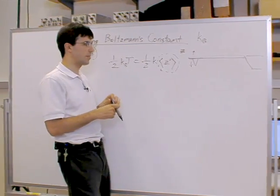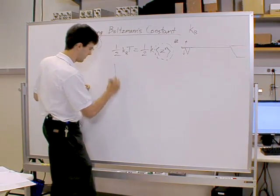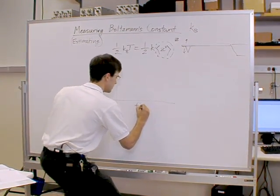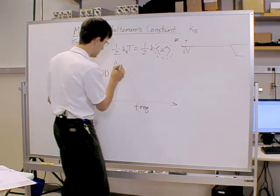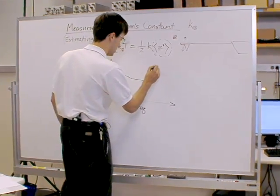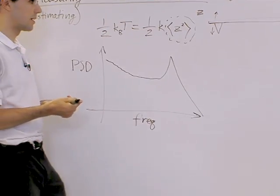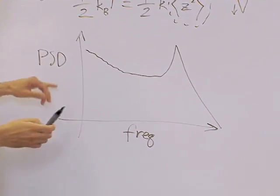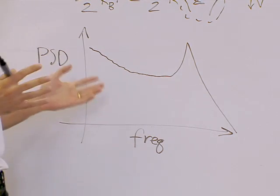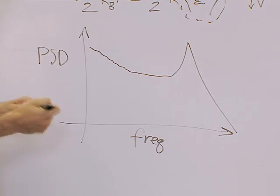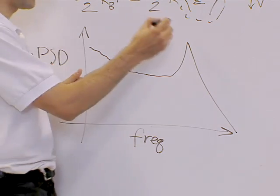In order to look at that, we're going to transform this into the frequency domain and think about it that way. It turns out that typically when you take the vibrational spectrum of such a second-order resonant device, it looks something like this. What this represents is the power spectral density plot of the displacement signal.